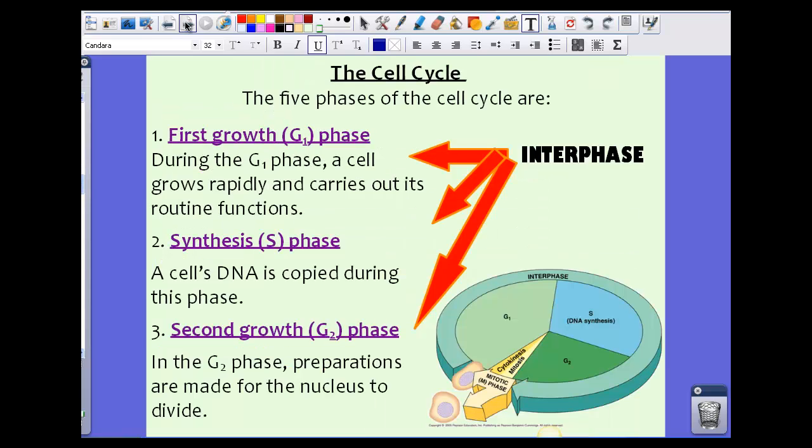Now there are five phases of the cell cycle. The first growth phase, or G1 phase. During the G1 phase, a cell grows rapidly and carries out its routine functions. So during this G1 stage, which is right here, this is our first stage.